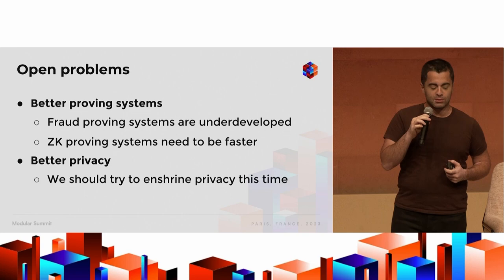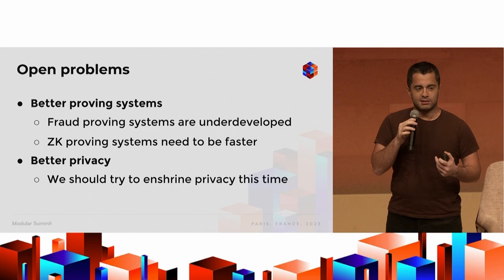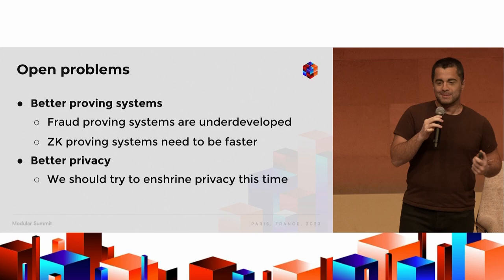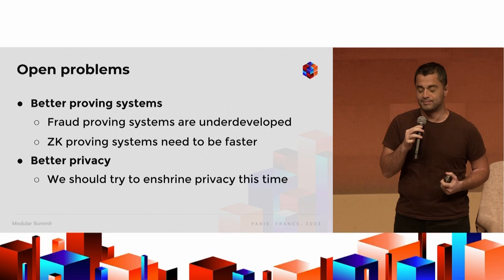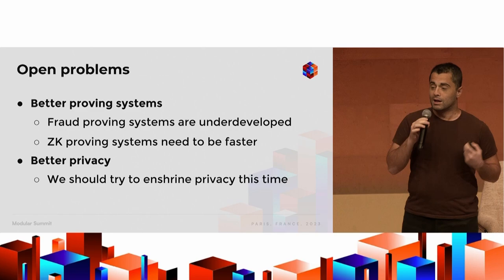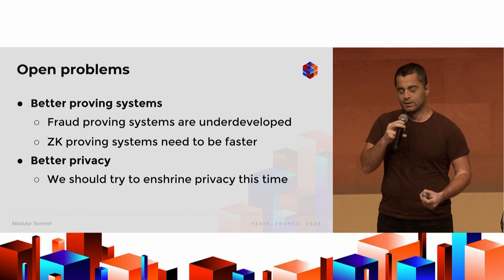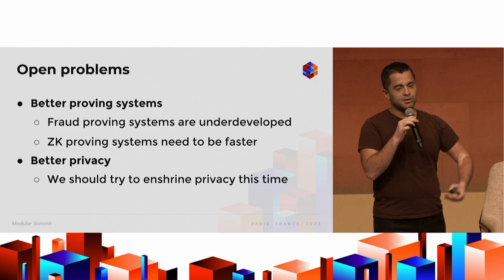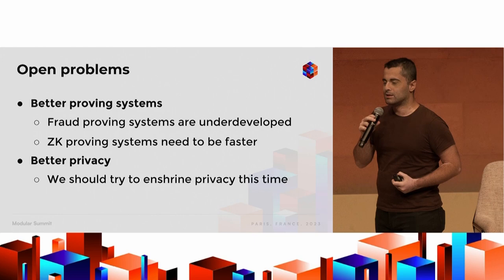We need better proving systems. Fraud proving systems are still underdeveloped — there isn't a single permissionless deployment of a fraud proof roll-up, except for Fuel v1. ZK proving systems are still slow and there's still a lot of optimization needed, with a lot of work in hardware acceleration and FPGAs to make ZK proving faster. And there's also privacy — one of the reasons current blockchains don't have privacy is because you often need to enshrine it into the execution environment. But now we have an opportunity because instead of deploying a new layer one for a new execution environment, people can now experiment with privacy-enabled execution environments. Anoma is going to be talking about some of these topics later today and tomorrow.